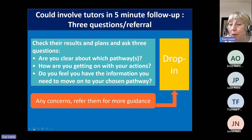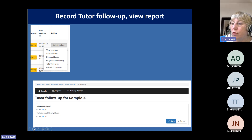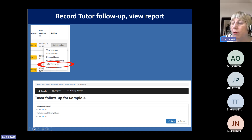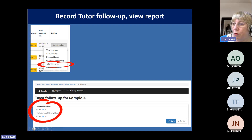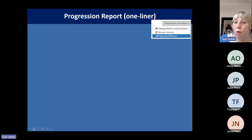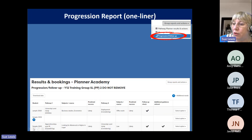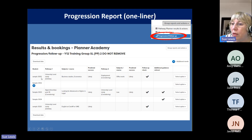Looking at the data by group, you can see the progression follow-up I've mentioned — the one-liner — showing what each student is thinking of and whether tutors have done a follow-up. This is where you can see whether you need to see somebody again.